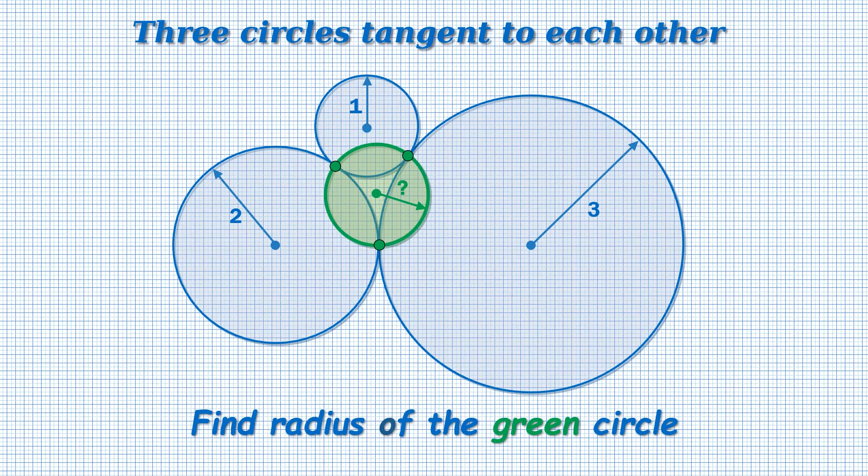Three circles with radii 1, 2 and 3 are tangent to each other. Find the radius of the circle passing through the tangent points. As usual, try to solve the problem before we proceed.